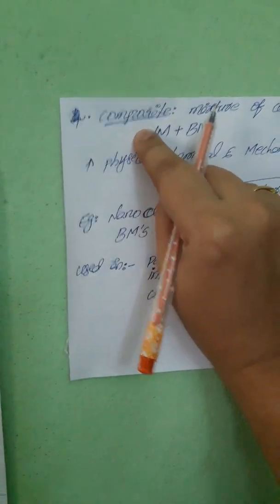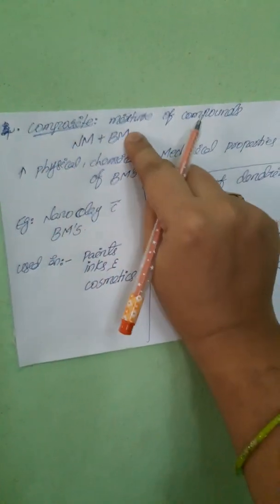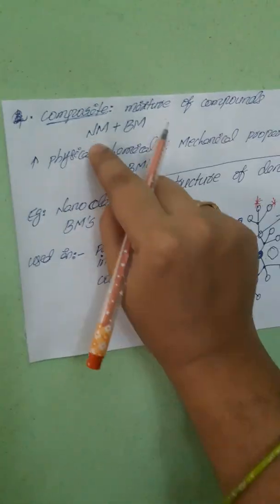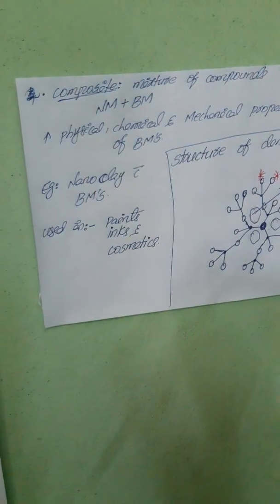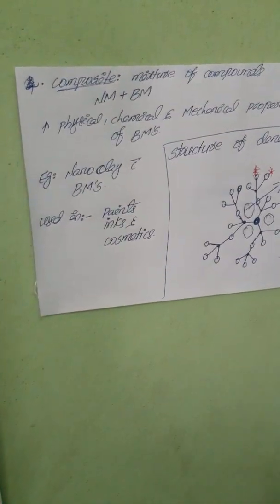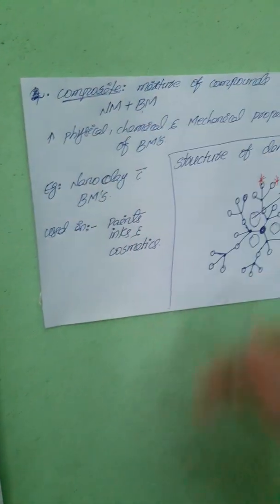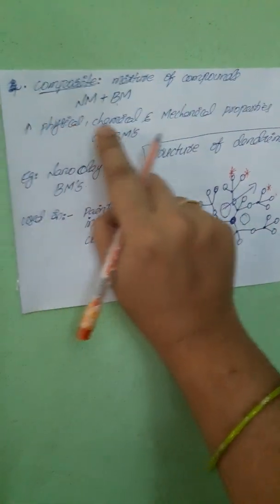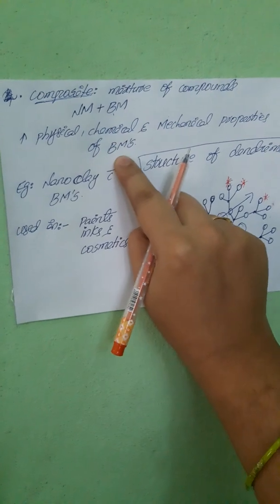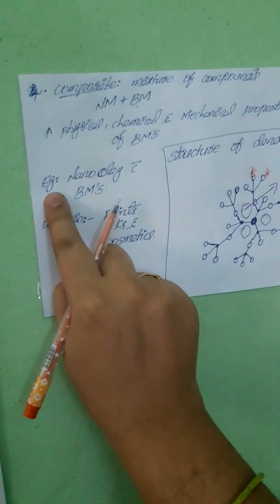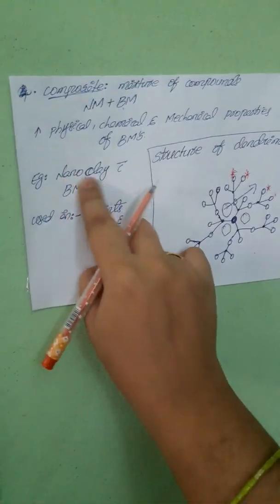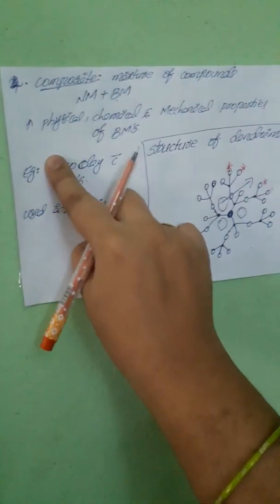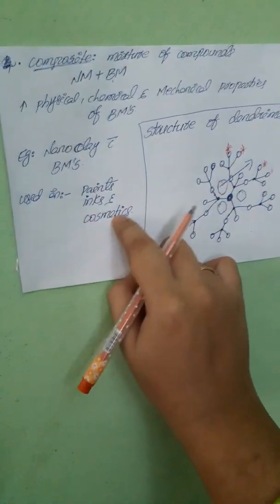Next, we move on to the fourth type: composites. Composite means a mixture of compounds — we mix nanomaterials with bulk materials. When we add nanomaterials to bulk materials, the physical, chemical, and mechanical properties of the bulk material increase. An example is adding nanoclay with bulk materials to improve their properties. Nanoclay is commonly used in paints, inks, and cosmetic purposes.